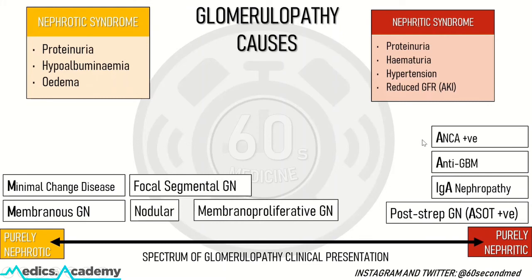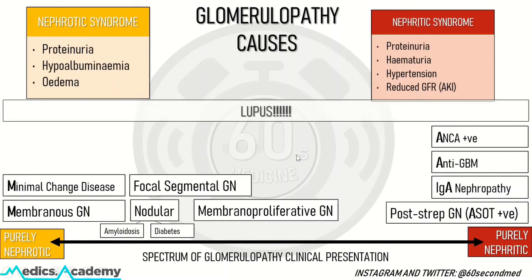Diseases that cause the mixed picture include focal segmental glomerulonephritis, nodular nephropathies which include amyloidosis and diabetes, and membranoproliferative glomerulonephritis, which classically sits right in the centre of both syndromes and includes all features of both.